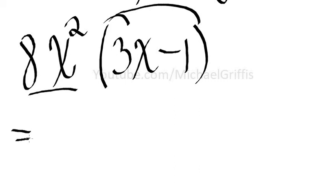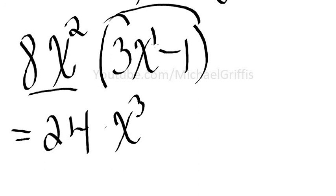So we're going to write an equal sign. We have 8x squared times 3x, so that's going to be 24. 8 times 3 is 24 times x to the third. Right, because it's 2 plus 1 is 3 minus 8x squared. And so we'll just leave it at that.